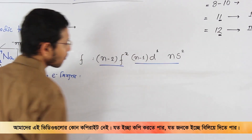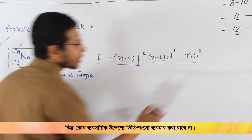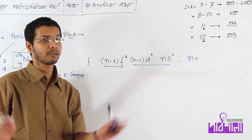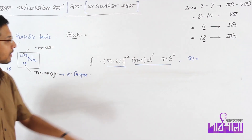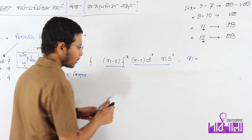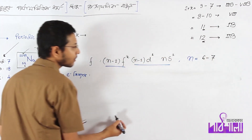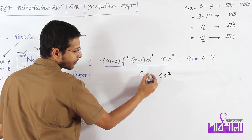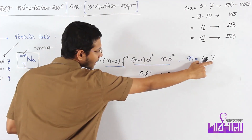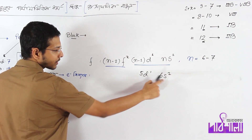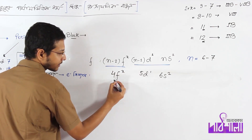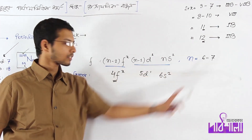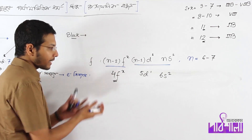For the F-block, the N value equals F orbitals. Writing out D, F, and F, the N value equals 6 and 7. If you choose 6s², then n-1 is 5d1 and n-2 gives 4f. So the F-block corresponds to periods 6 and 7, with the configuration 6s² alongside 4f orbitals.